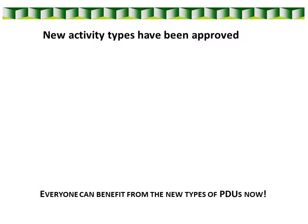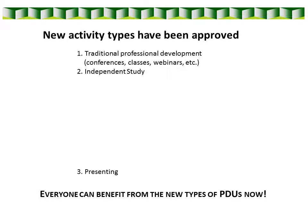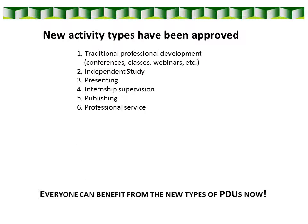Along with the changes to the number of PDUs required, new activity types will now be accepted. Along with traditional professional development, which includes conference sessions, college classes, and webinars, the certifying committee has added the following activities: independent study, presenting, internship supervision, publishing, and professional service. Everyone, both groups 1 and 2, can use the new activity types right away. These are effective for activities completed after January 1, 2015.